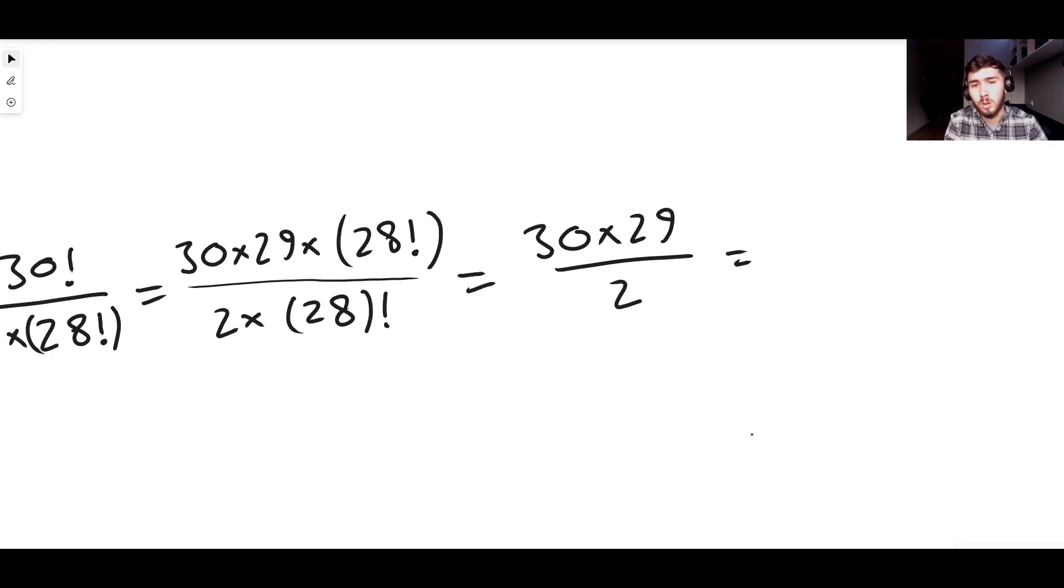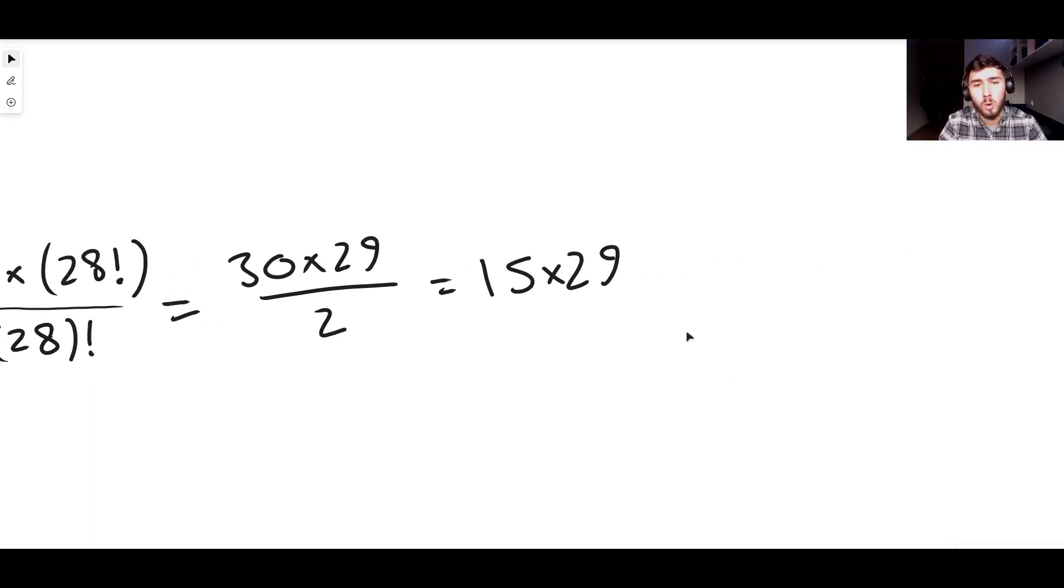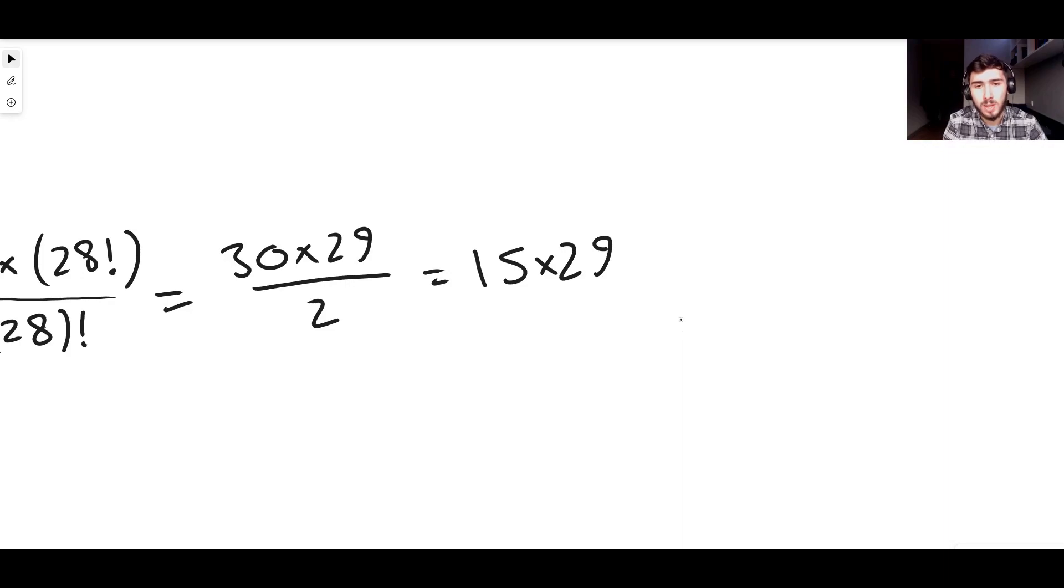30 times 29 over 2 is just 15 times 29. Boom. And then we just work out what 15 times 29 is. And what we get left over with is 435. That's how you do it.